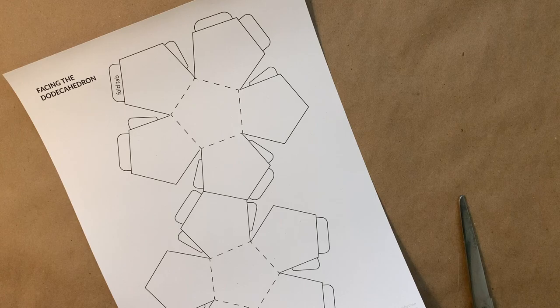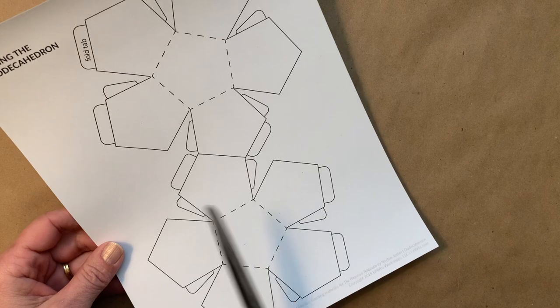So we're going to make our own dodecahedrons by cutting out this funny shape from this piece of paper and adding some wonderful expressions of our own, and then folding it into a three-dimensional shape.